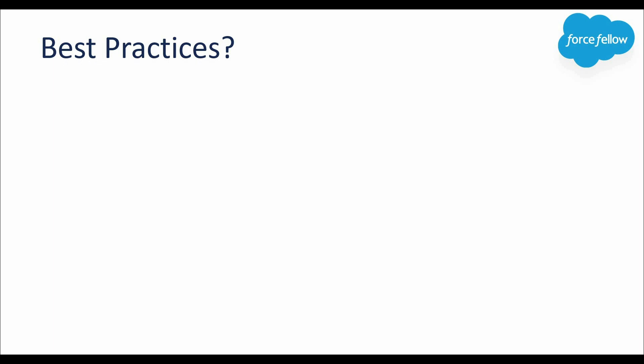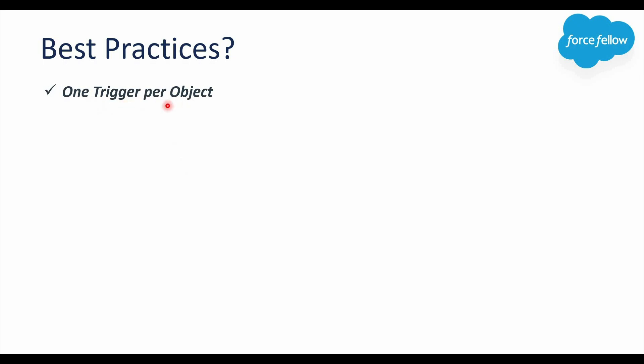The first best practice is one trigger per object — we should always create only one trigger per object. The first reason is that execution order is not guaranteed. If we have multiple triggers on the same object, we can't control their execution order at runtime. For example, with two triggers on Account, we don't know which will fire first. This may cause inconsistent logic execution and logic dependency issues.